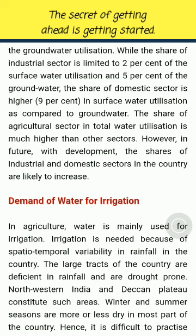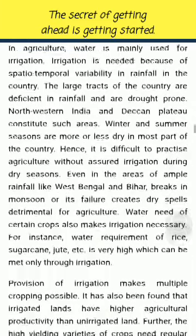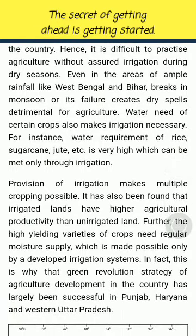Demand of Water for Irrigation: In agriculture, water is mainly used for irrigation. Irrigation is needed because of spatiotemporal variability in rainfall in the country. Large tracts of the country are deficient in rainfall and are drought-prone — northwestern India and the Deccan Plateau constitute such areas. Winter and summer seasons are more or less dry in most parts of the country. Hence, it is difficult to practice agriculture without assured irrigation during dry seasons. Even in areas of ample rainfall like West Bengal and Bihar, breaks in monsoon or its failure creates dry spells detrimental for agriculture. Water need of certain crops like rice, sugarcane and jute is very high and can be met only through irrigation. Irrigated lands have higher agricultural productivity, and the high-yielding varieties of crops need regular moisture supply. This is why the Green Revolution strategy of agriculture development has largely been successful in Punjab, Haryana and Western Uttar Pradesh.